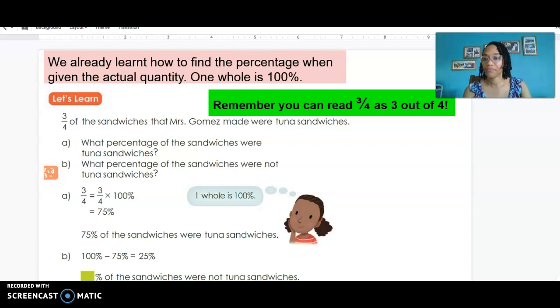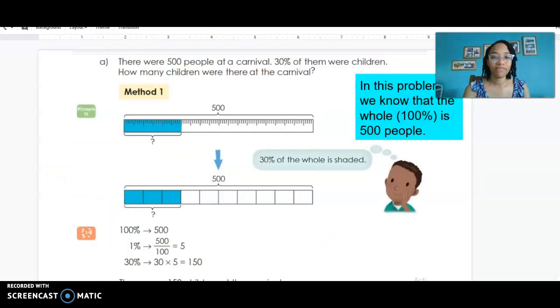Now let's look at a new problem. There were 500 people at a carnival. 30% of them were children. How many children were at the carnival? So we've seen this problem reversed before, but we've never had a percent of a quantity. When we want to picture this idea, we know that the whole amount of people is 500, and a portion of those, just 30% of them, were children.